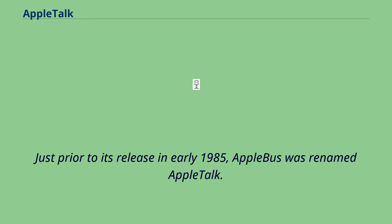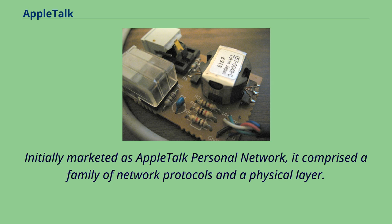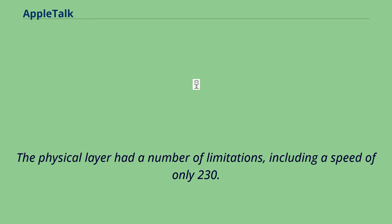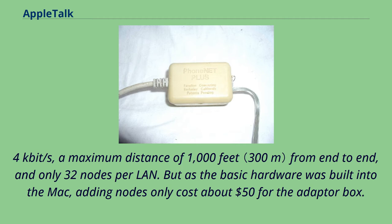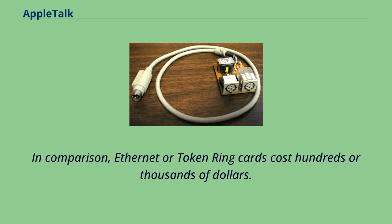Initially marketed as AppleTalk Personal Network, it comprised a family of network protocols and a physical layer. The physical layer had limitations including a speed of only 230.4 kilobits per second, a maximum distance of 1,000 feet end to end, and only 32 nodes per LAN. But as the basic hardware was built into the Mac, adding nodes only cost about $50 for the adapter box. In comparison, Ethernet or Token Ring cards cost hundreds or thousands of dollars.